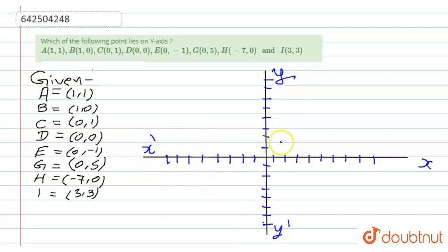So the first point is A, which is (1,1), this is 1 and 1, this is A. Second, B is (1,0), this is B. C is (0,1), this is C. D is (0,0) and this is origin D. E is (0,-1), 0 and -1, this is E.